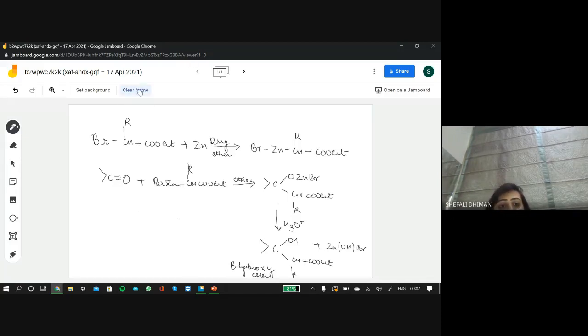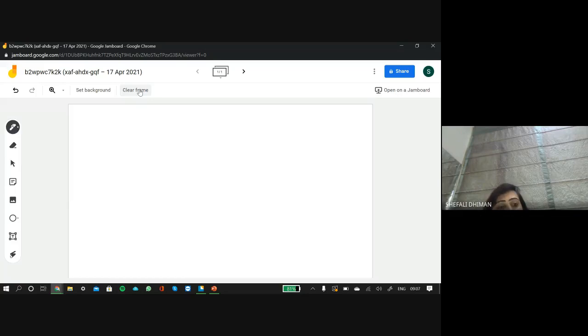So I think this is very clear, how you prepare a Reformatsky reaction. There are other reactions also of the organo-zinc compound, but I think they are not so important. More important are those reactions which are of the Grignard.